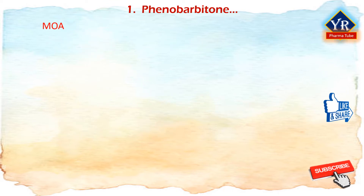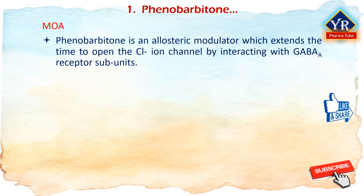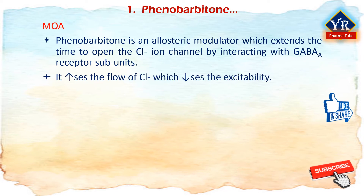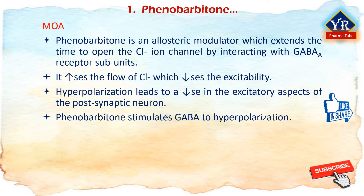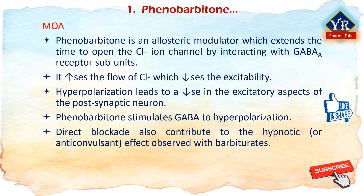Mechanism of action of Phenobarbitone: Phenobarbitone is an allosteric modulator which extends the amount of time the chloride ion channel is open by interacting with GABA-A receptor subunits. Through this action, phenobarbitone increases the flow of chloride ions into the neuron, which decreases the excitability of the postsynaptic neuron. Hyperpolarizing this postsynaptic membrane leads to a decrease in the general excitatory aspects of the postsynaptic neuron. By making it harder to depolarize the neuron, the threshold for the action potential will be increased. Phenobarbitone stimulates GABA to accomplish this hyperpolarization. Direct blockade of excitatory glutamate signaling is also believed to contribute to the anticonvulsant effect observed with barbiturates.